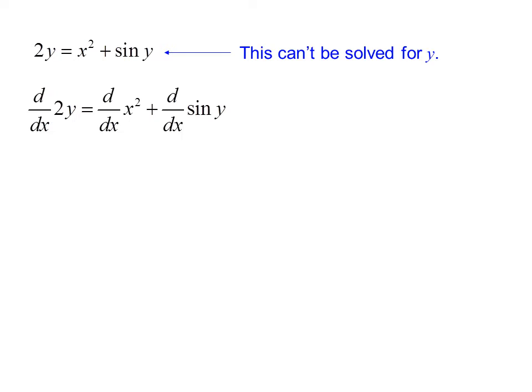But we take the derivative of both sides with respect to x, and we get 2 dy/dx equals 2x plus cosine y dy/dx. Notice again that we use the chain rule in two places.